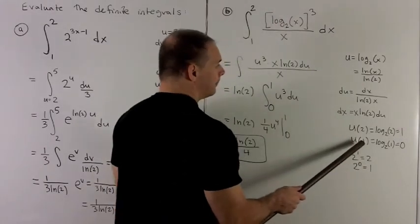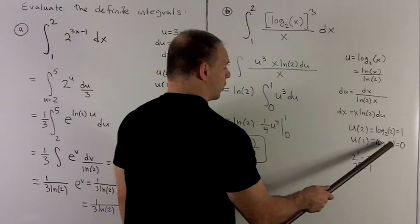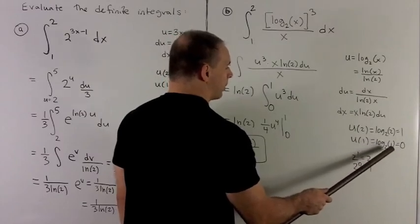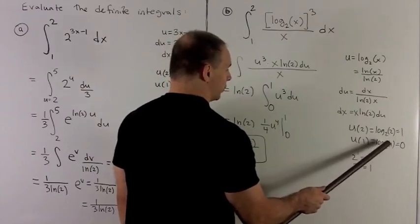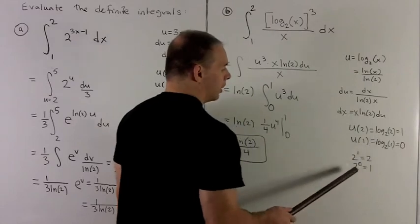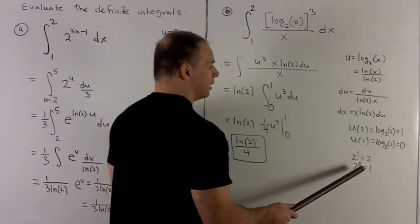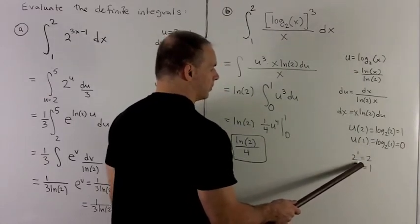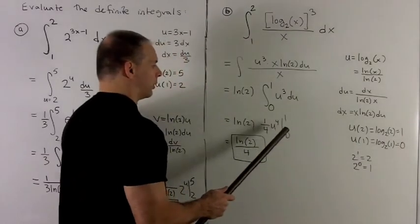u of 1 is log base 2 of 1, so we want to find the number that I raised 2 to to get 1. Well, 2 to the 0 is equal to 1, so that's going to mean that this logarithm is equal to 0. So that's my other limit.